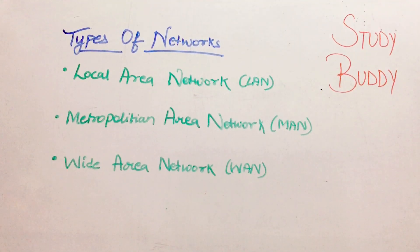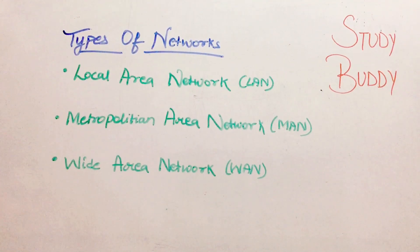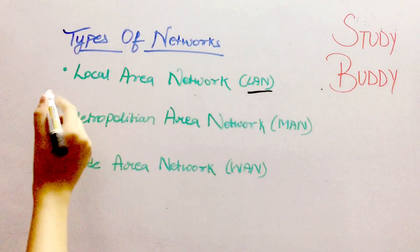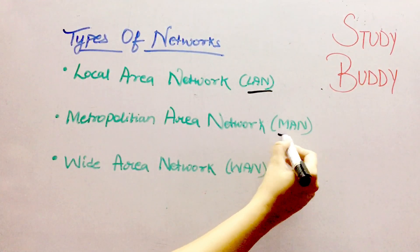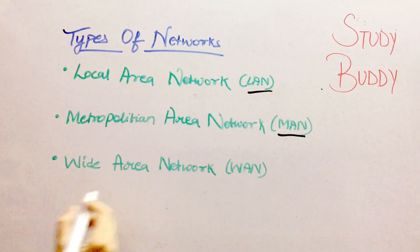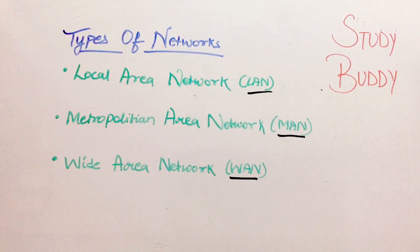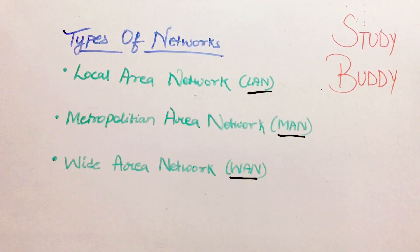Now we will discuss the various types of networks. There are three types: the first one is LAN, which is your Local Area Network; the second one is MAN, which is your Metropolitan Area Network; and the last one is WAN, which is your Wide Area Network.